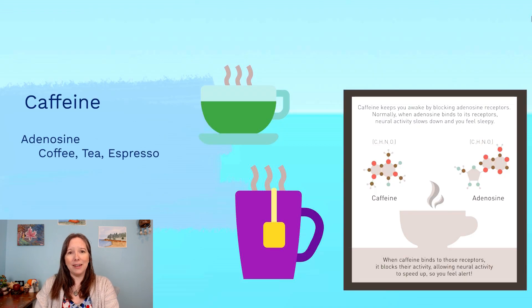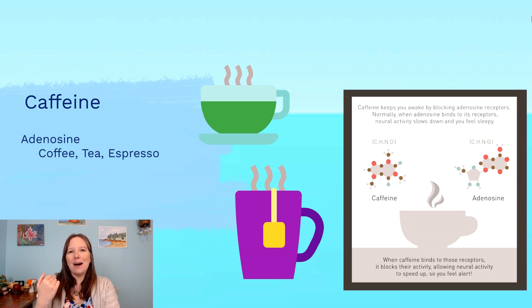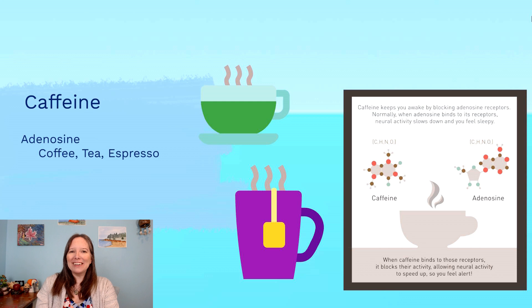Next, we'll talk about caffeine. What might surprise you is caffeine is not actually an upper in the traditional sense — it doesn't make you feel more energized. Caffeine actually mimics a receptor that blocks adenosine, the neurotransmitter that allows you to feel tired. So caffeine doesn't make you more awake; it blocks the chemical that lets you know you're tired.